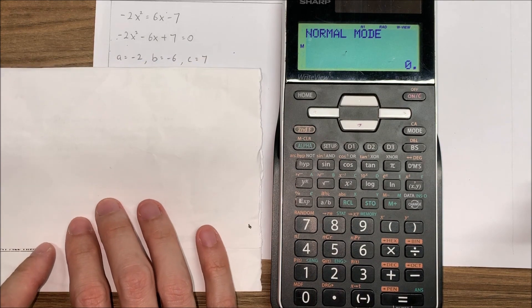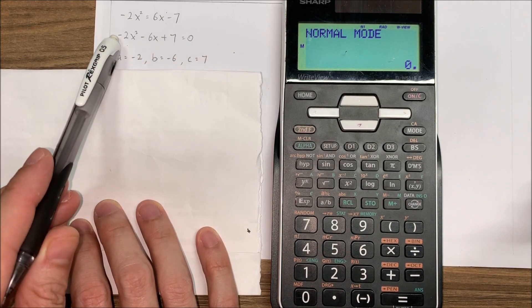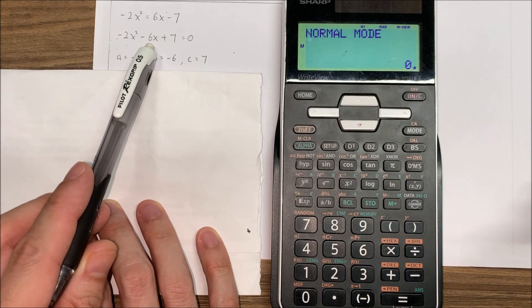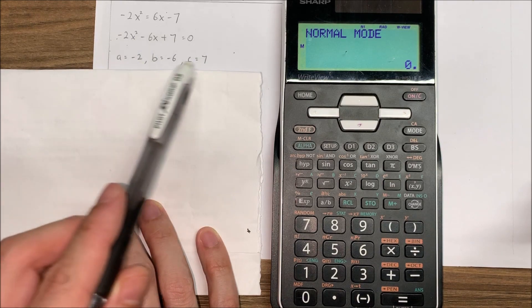And then I'm going to identify the a, b, and c. So a will be negative 2, b is negative 6, and c is 7. So these are the a, b, c.